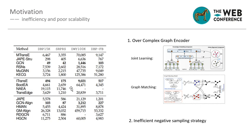However, previous entity alignment methods are inefficient and poor in scalability. As summarized in this figure, most of them require several hours on a small dataset. With the scale of the data increasing, some of them even take days. The high cost in time hinders the feasibility of applying entity alignment methods to large-scale datasets.